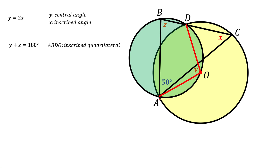The last thing we need to know is that the sum of angles in any triangle is 180 degrees. Looking at triangle ABC, we get: 50 plus Z plus X equals 180 degrees. Now we have three equations and three unknowns — X, Y, and Z — so we can solve the system and find all the unknowns.